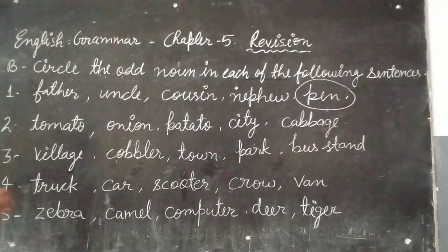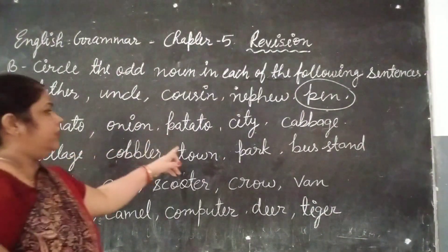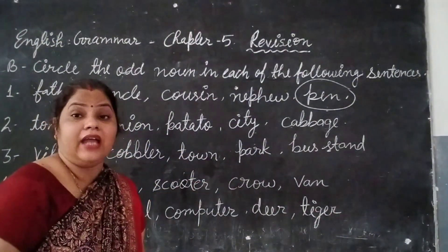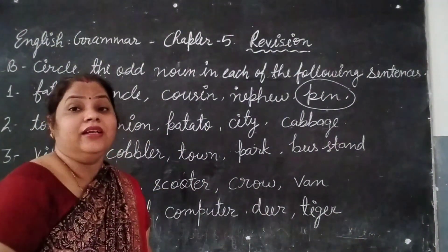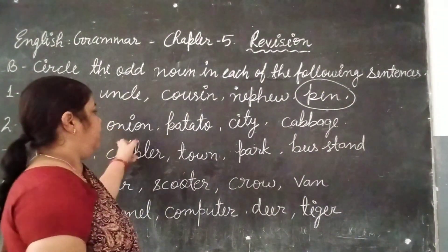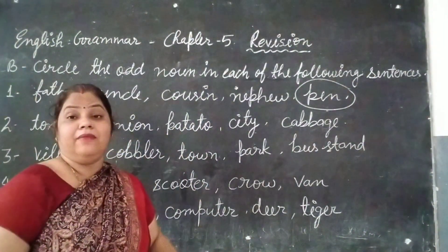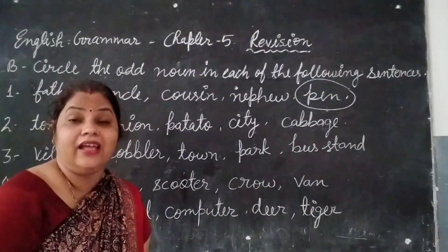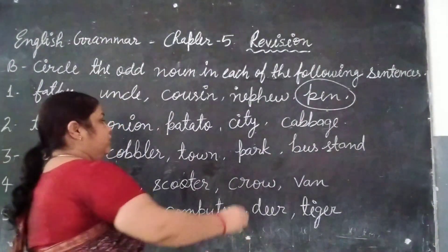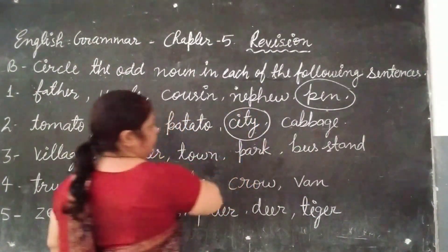Second question: tomato, onion, potato, city, cabbage. All of these — tomato, onion, potato, cabbage — are vegetables. The most different one is city, which means 'shahar' (city/town). So you have to circle city.